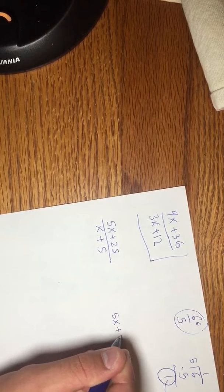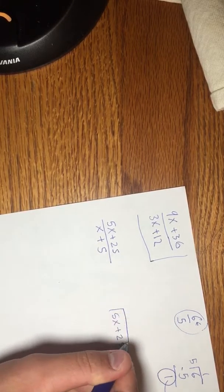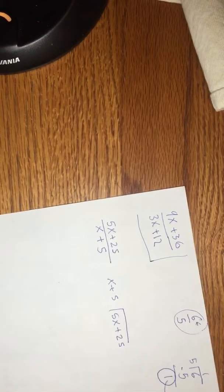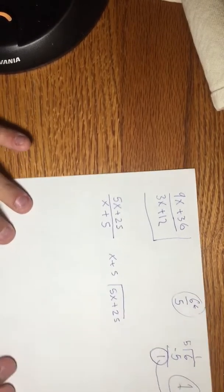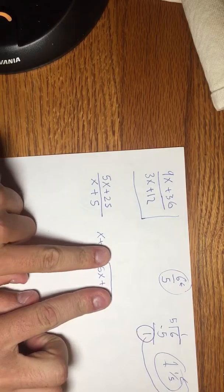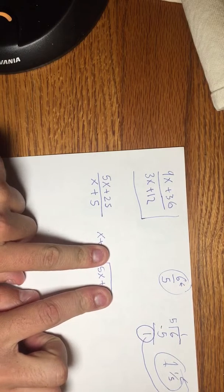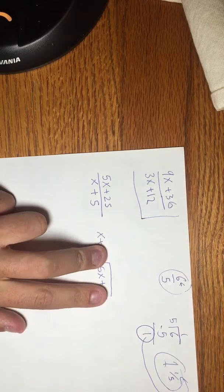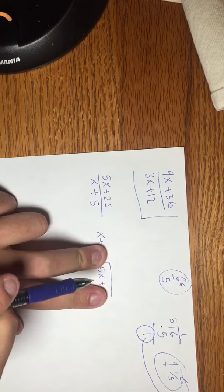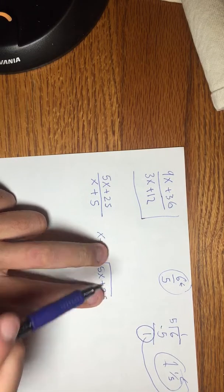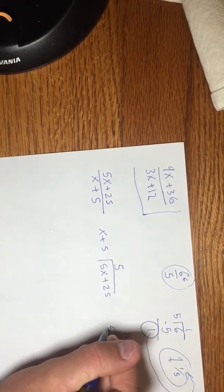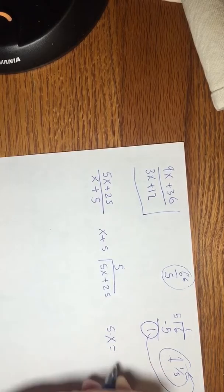So 5x plus 25. Then this bottom one, we're going to put on the outside, x plus 5. Now with this, I just want you to focus on the first number of each one. We've got the 5x and the x. How many times does x go into 5x? Well, it goes in about 5 times, doesn't it? Because 5 times x equals 5x.